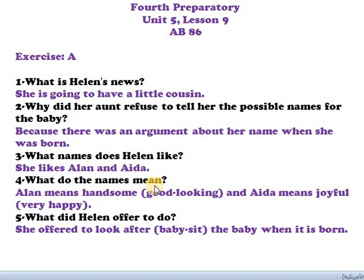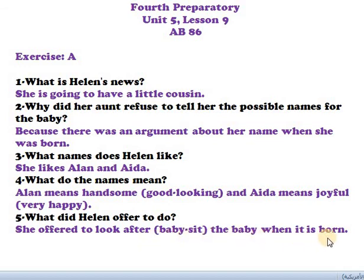Question three: What names does Helen like? She likes Alan and Aida. Question four: What do the names mean? Alan means 'handsome' — the same meaning as 'good looking'. Aida means 'joyful' — the same meaning as 'very happy'. Question five: What did Helen offer to do? She offered to look after or babysit the baby when it is born — that's all, thank you.